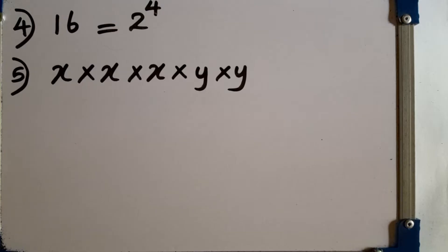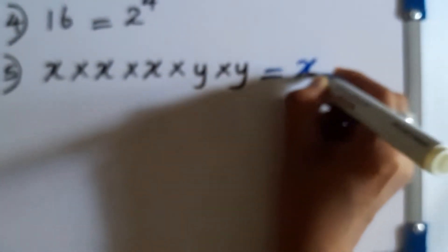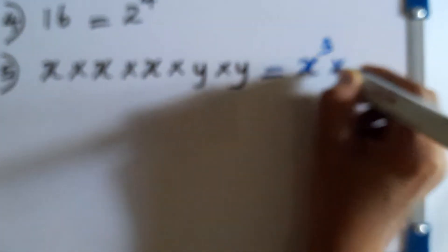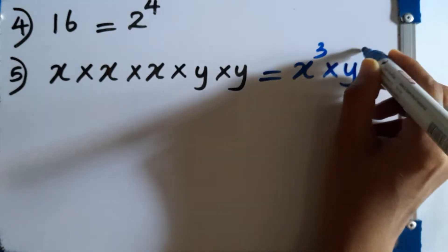Question number 5. Write down this expression in index notation. We can write it as x to the power of 3 times y to the power of 2.